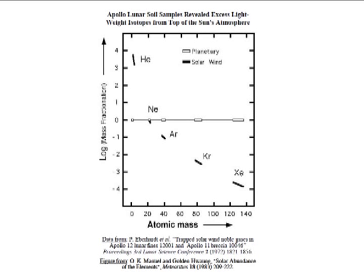We can't sample inside the Sun, but measurements on the solar wind from the top of the Sun's atmosphere revealed mass fractionated XE1 there. In fact, isotopes of all the elements in the solar wind are mass fractionated, as shown here.